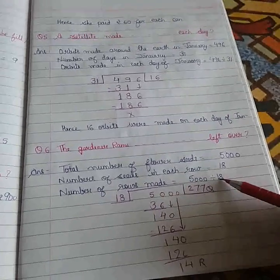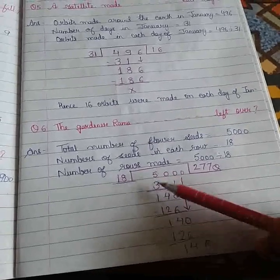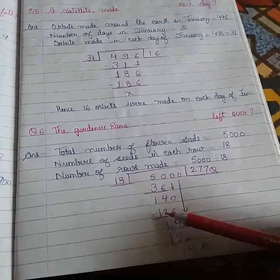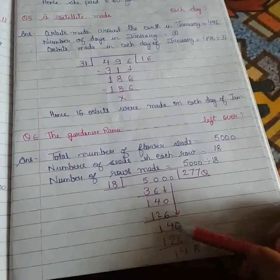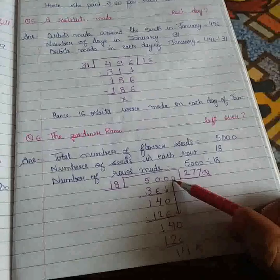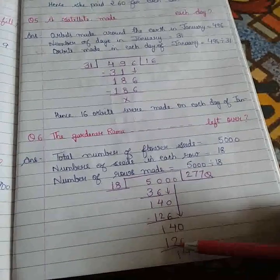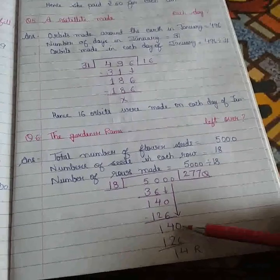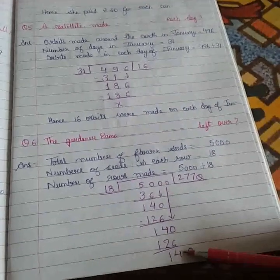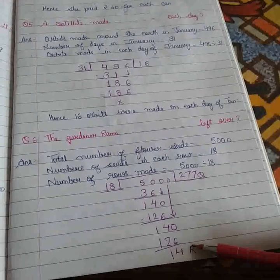5000 divided by 18. So 18 times 2 is 36. Subtract now: 10 minus 6 is 4 and 4 minus 3 is 1. Now take this 0 down. It is 140 now. 18 times 7 is 126. Then 10 minus 6 is 4, 3 minus 2 is 1. This is 14 now. Now the last 0 we will take down. It will become 140. So 18 times 7 is 126 again. Again we will subtract, again we will get 14 only. So in this way we know that in this question remainder is there. That means 277 rows will be completed and 14 seeds are left over with this gardener.